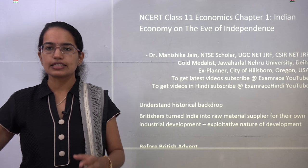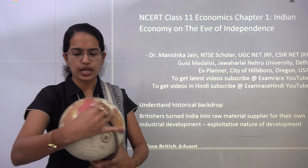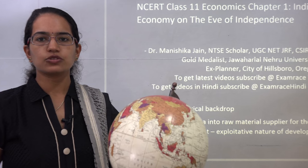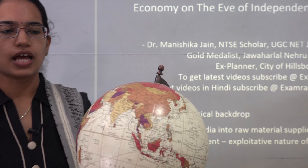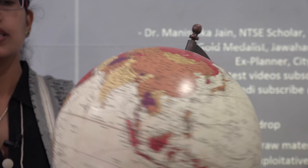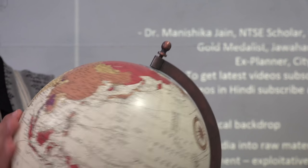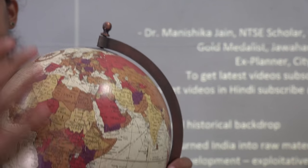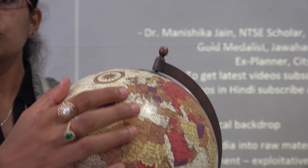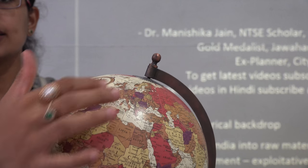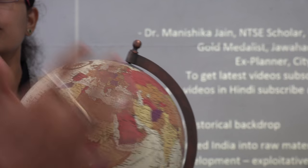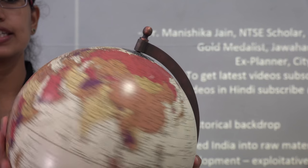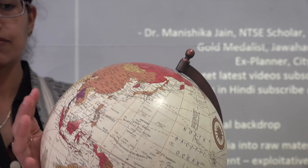If we try to understand the developments, we have a kind of world map here and we will try to zoom in and out to understand the developments. You have India here and you had the British Empire here. We used to say that the sun of the British Empire never sets because throughout the globe you had British territories established.